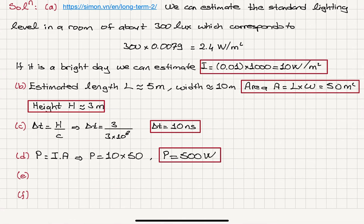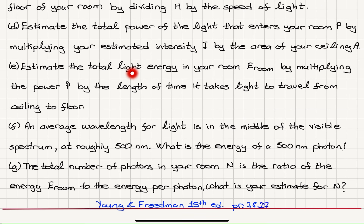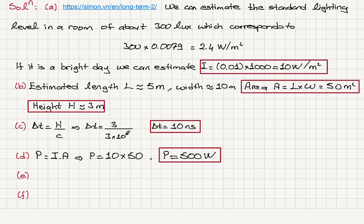For part e, we estimate the total light energy in the room by multiplying the power by the time it takes light to travel from the ceiling to the floor. Since power is energy per unit time, the energy in the room is P times delta t: 500 watts times 10 nanoseconds, which gives us an energy of 5 microjoules.